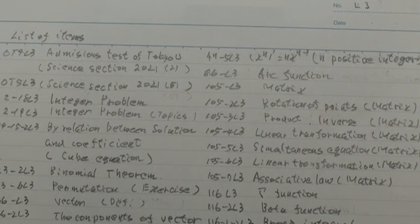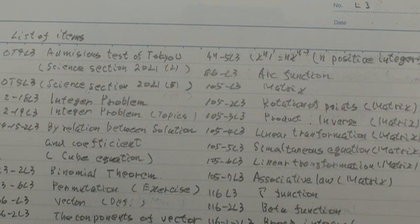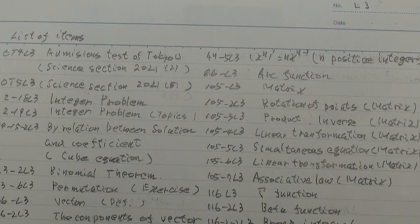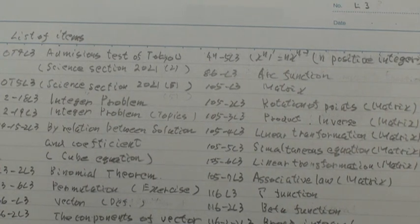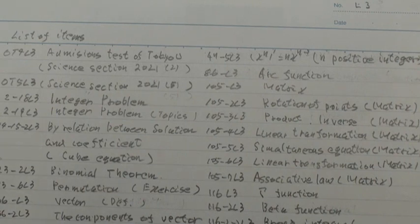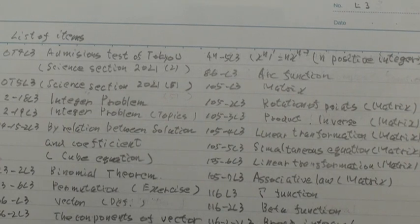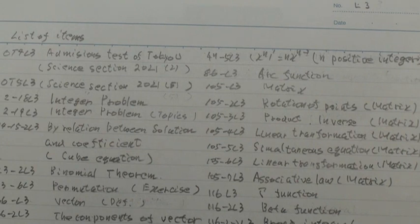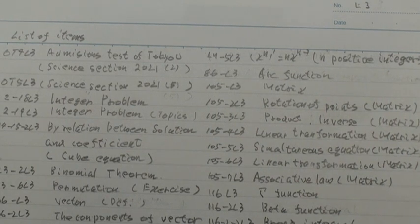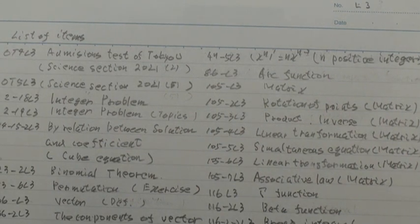Hello everyone, number L3, list of items. OT4L3, Admission Test of Tokyo University, Science Section 2021-2. OT5L3, Science Section 2021-5.